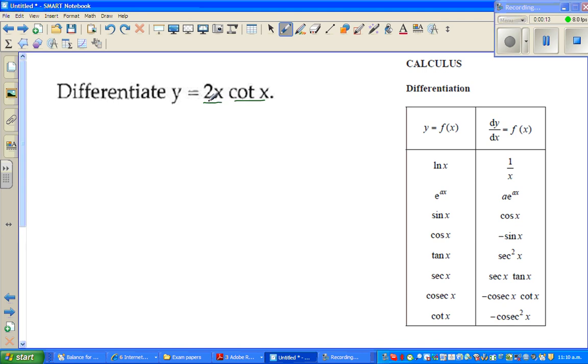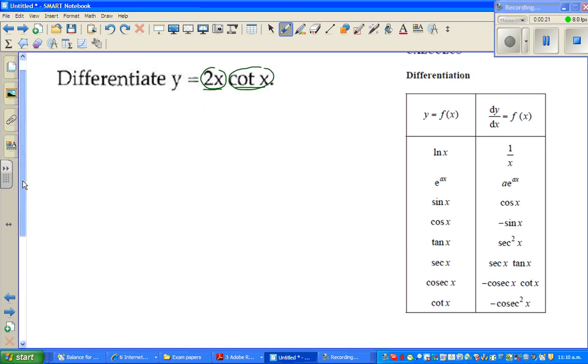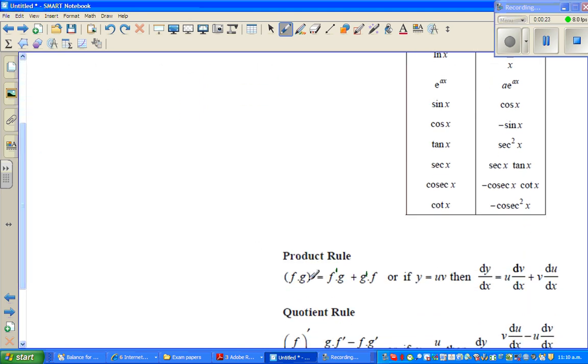Now this is the product of two functions. This is one function, 2x, and this is the other function. So if you use the product rule, the product rule says if you've got two functions f dot g, differentiate the first, leave the second function as it is. That is f dash dot or times g, plus differentiate the second function and leave the first function.